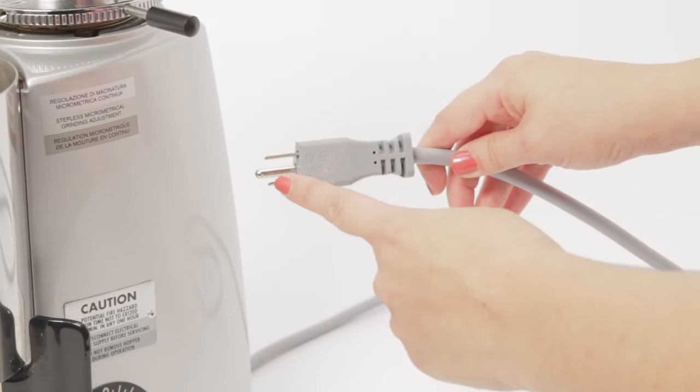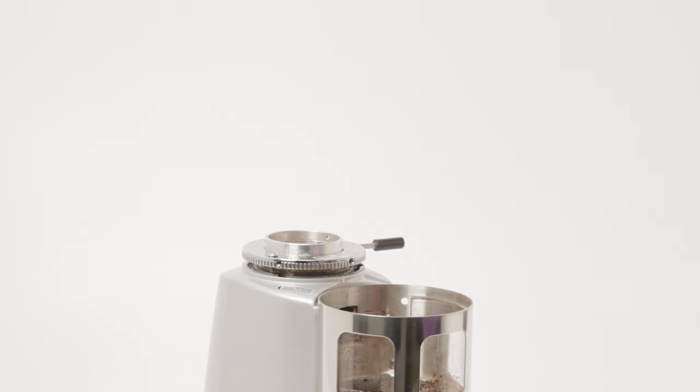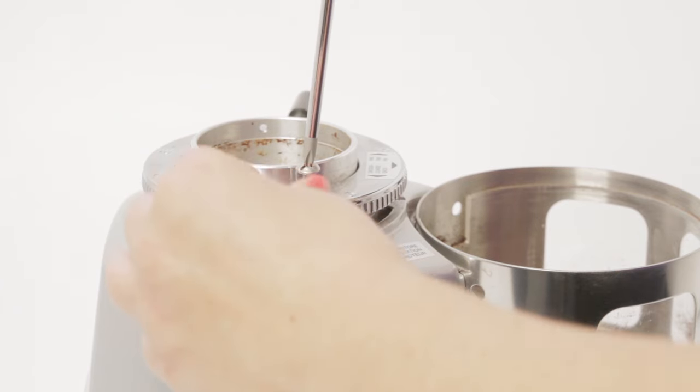To start, make sure the grinder is unplugged. Remove the bean hopper and any excess beans. Now remove the adjustment stop screw. We're showing this procedure on a Maser grinder. Different grinders may or may not have other screws located on the top of the adjustment collar, which will need to be removed.